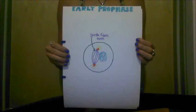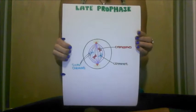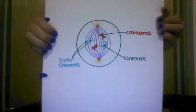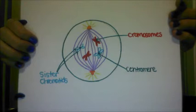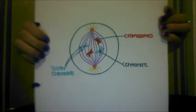The nucleolus also becomes unclear and starts to disappear. There is also late prophase, where the nuclear membrane and nucleolus vanish completely. The duplicated chromosomes coil and become shorter and thicker in appearance, and the nucleolus and nuclear envelope gradually disappear.